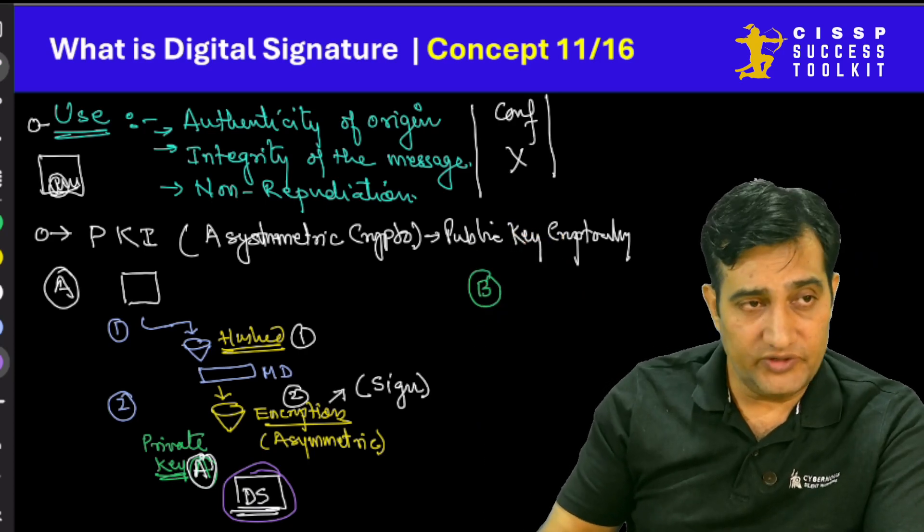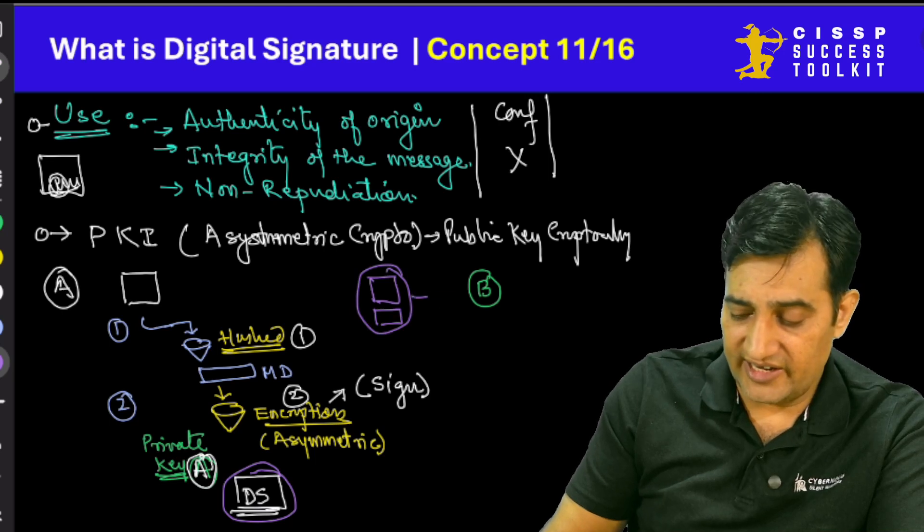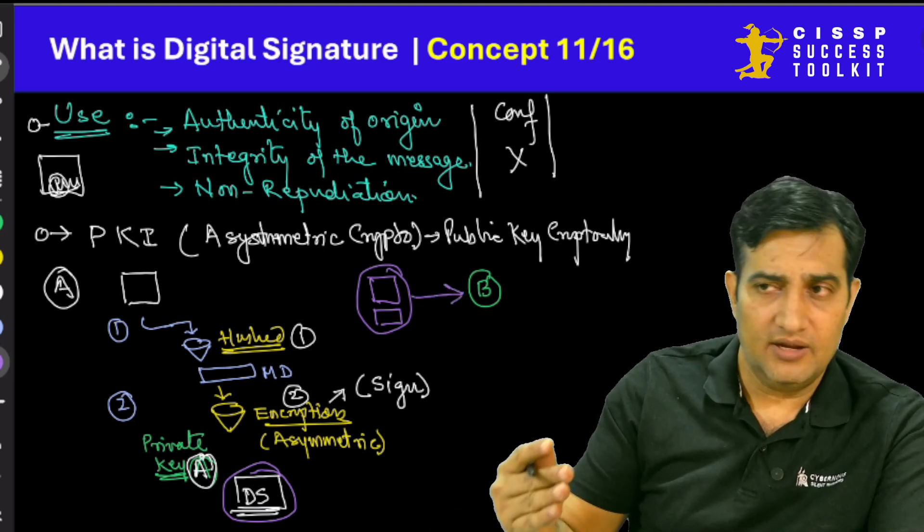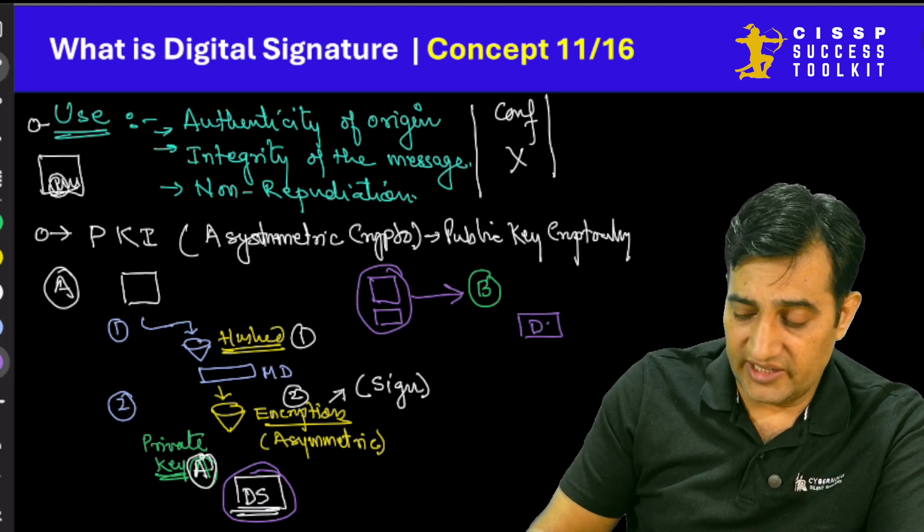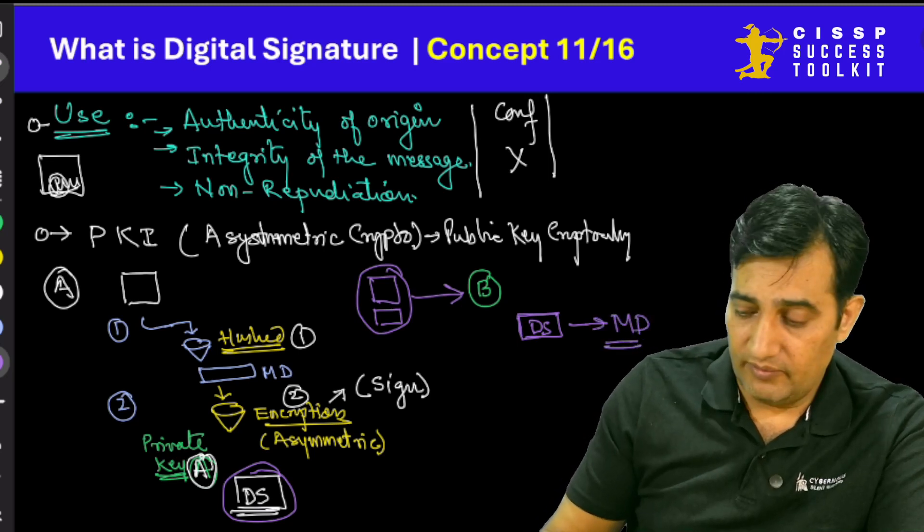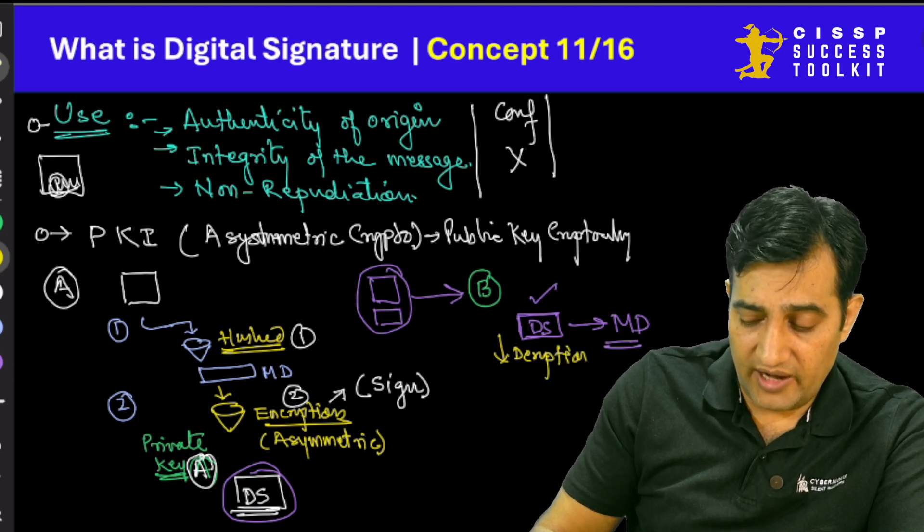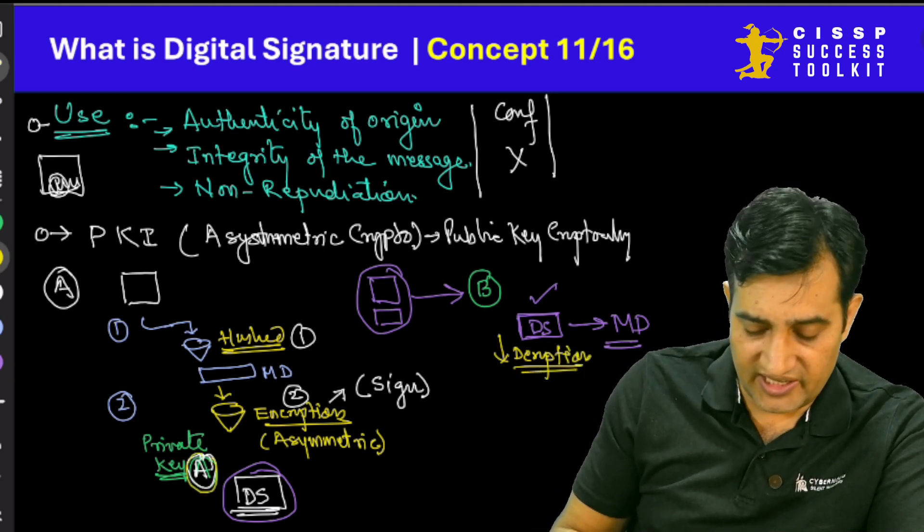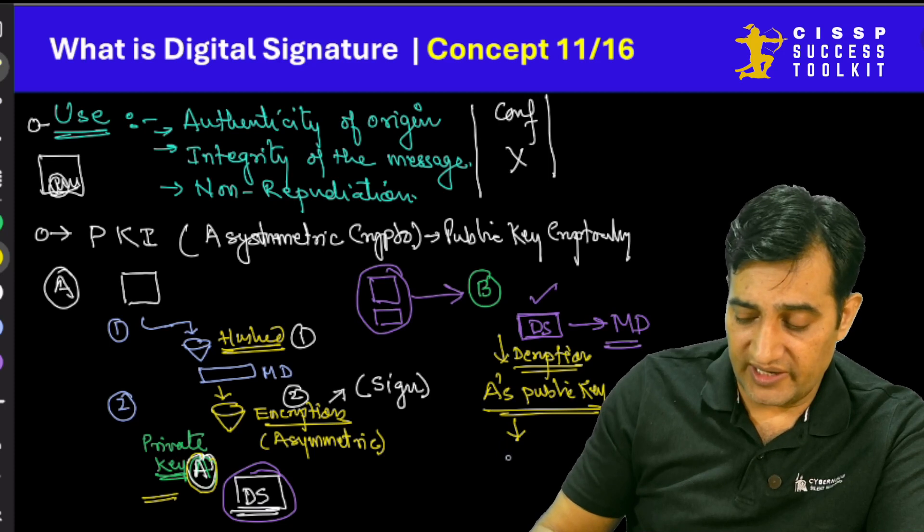Then what this guy will do? As we normally do, this guy will take the message, will also attach the digital signature along with that, pack it and send to the other party, to the B. B will again the same process. He will take the particular digital signature. But this digital signature, he will not be able to open it. He will not be able to get the message digest out of it. Why? Because this is already encrypted. And if this is encrypted, we need a decryption key. And which decryption key? It has been encrypted by Mr. A private key. So we need a public key to decrypt it.